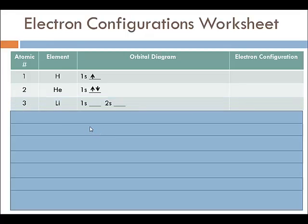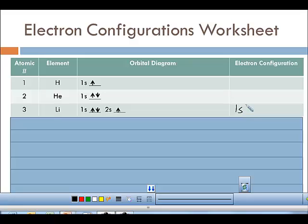Lithium has three electrons. We can't fit more than two in the 1s orbital, so we move on to the next orbital: the 2s. There are two electrons in the 1s and one in the 2s, for a total of three. This demonstrates the Pauli exclusion principle — paired with one up and one down — and the Aufbau principle by going from lowest to highest energy level. The electron configuration is 1s² 2s¹.